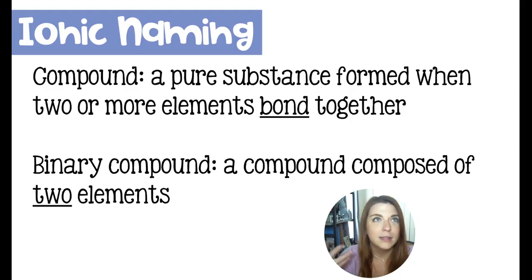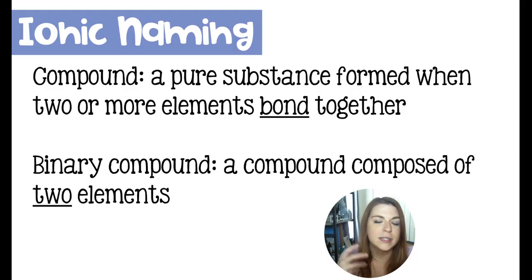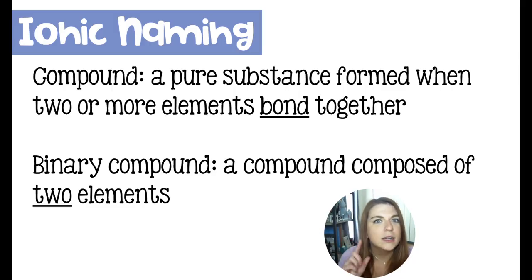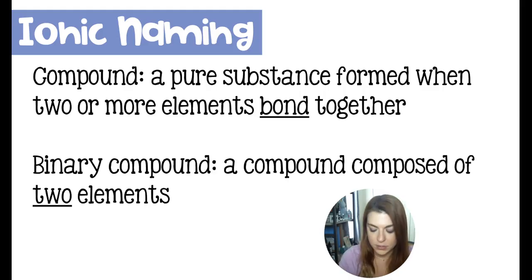Everybody gets the right answer. So that's what we mean by a pure substance, and a compound is a type of pure substance. Specifically, a binary compound is a compound made of two elements. Think of H2O — even though there are three atoms, it's made of hydrogen and oxygen, and that's what makes it a binary compound.